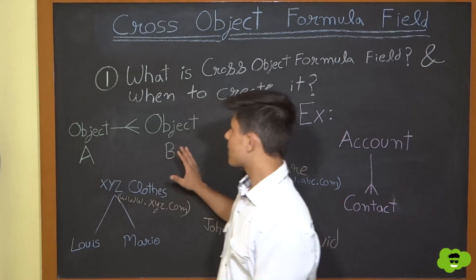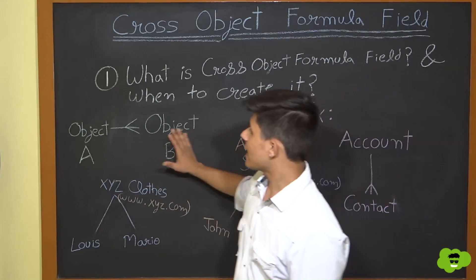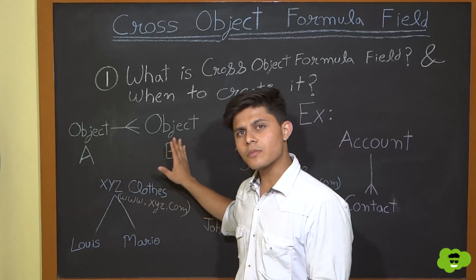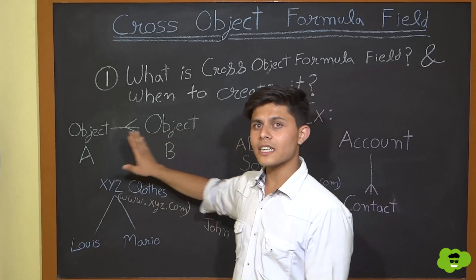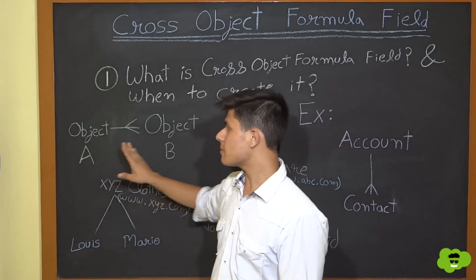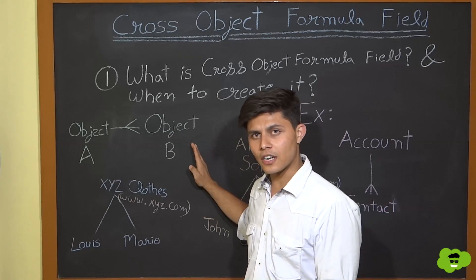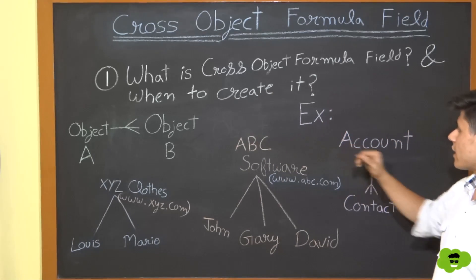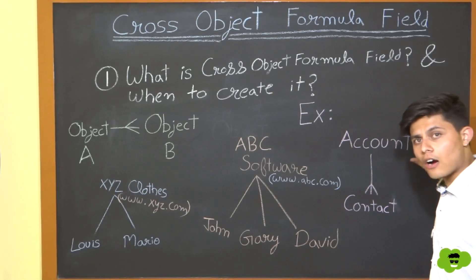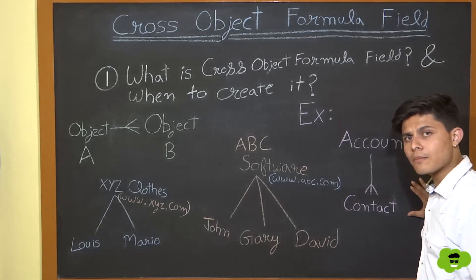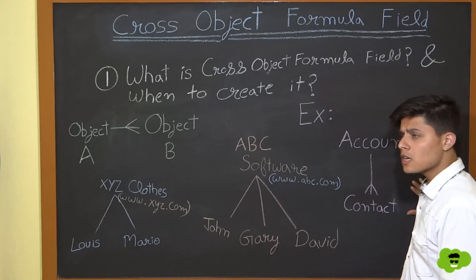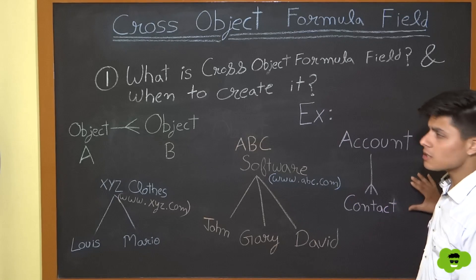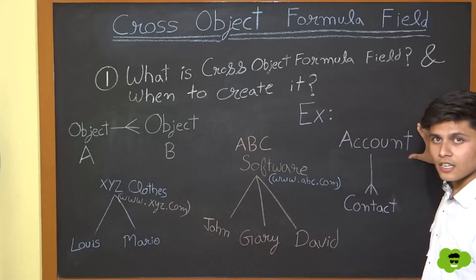Here are two objects, Object A and Object B. Both are related to each other — Object A is on the one side of a relationship and Object B is on the many side. A classic example is Account and Contact: both are standard Salesforce objects, where Contact is on the many side and Account is on the one side.